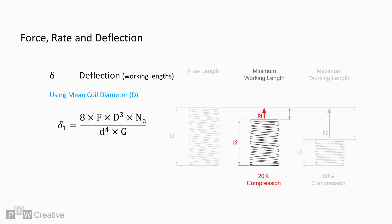With a focus on the mean coil diameter, we can work out the deflection. 8 times the force at length times mean diameter to the power of 3 times the number of active coils over the wire diameter to the power of 4 times the modulus of rigidity gives us a deflection of 6.56 mm.